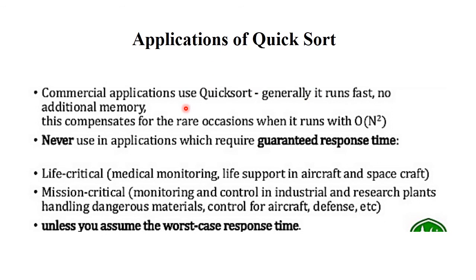Quick sort is generally used in commercial applications because it runs fast and requires no additional memory, which compensates for the rare occasion when it runs at O(n²). Quick sort is never used in applications that require guaranteed response time. For life-critical systems like medical monitoring, life support in aircraft, and spacecraft, this algorithm is used because it quickly sorts data. It is also used for mission-critical applications like monitoring and control of industrial and research plants, handling dangerous materials, and control of aircraft and defense databases.